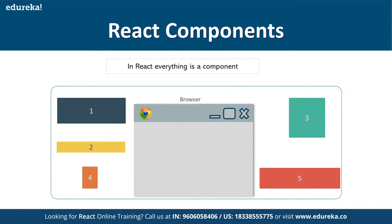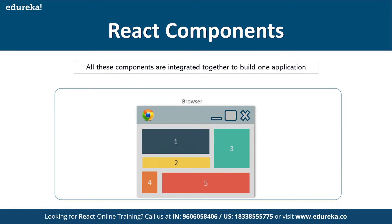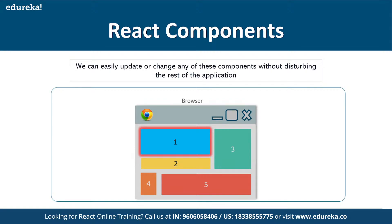When we are working on any application, we can divide the entire application into smaller components. As we can see in the diagram, a website can be broken down into smaller components — component one, two, three, four, and five. The main advantage of building the app in terms of small individual components is that if something goes wrong in one component, it is not going to impact the other components. That's how we can ensure better structure and better maintainability.